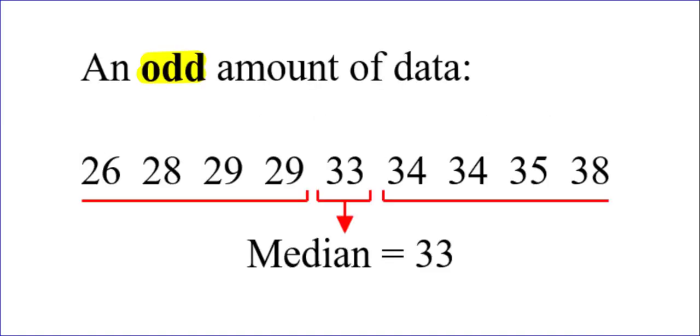Now, there's two different scenarios here. You could have an odd amount of data like one, two, three, four, five, six, seven, eight, nine. That's an odd amount of data. When you have an odd amount of data, there will be one number in the middle.